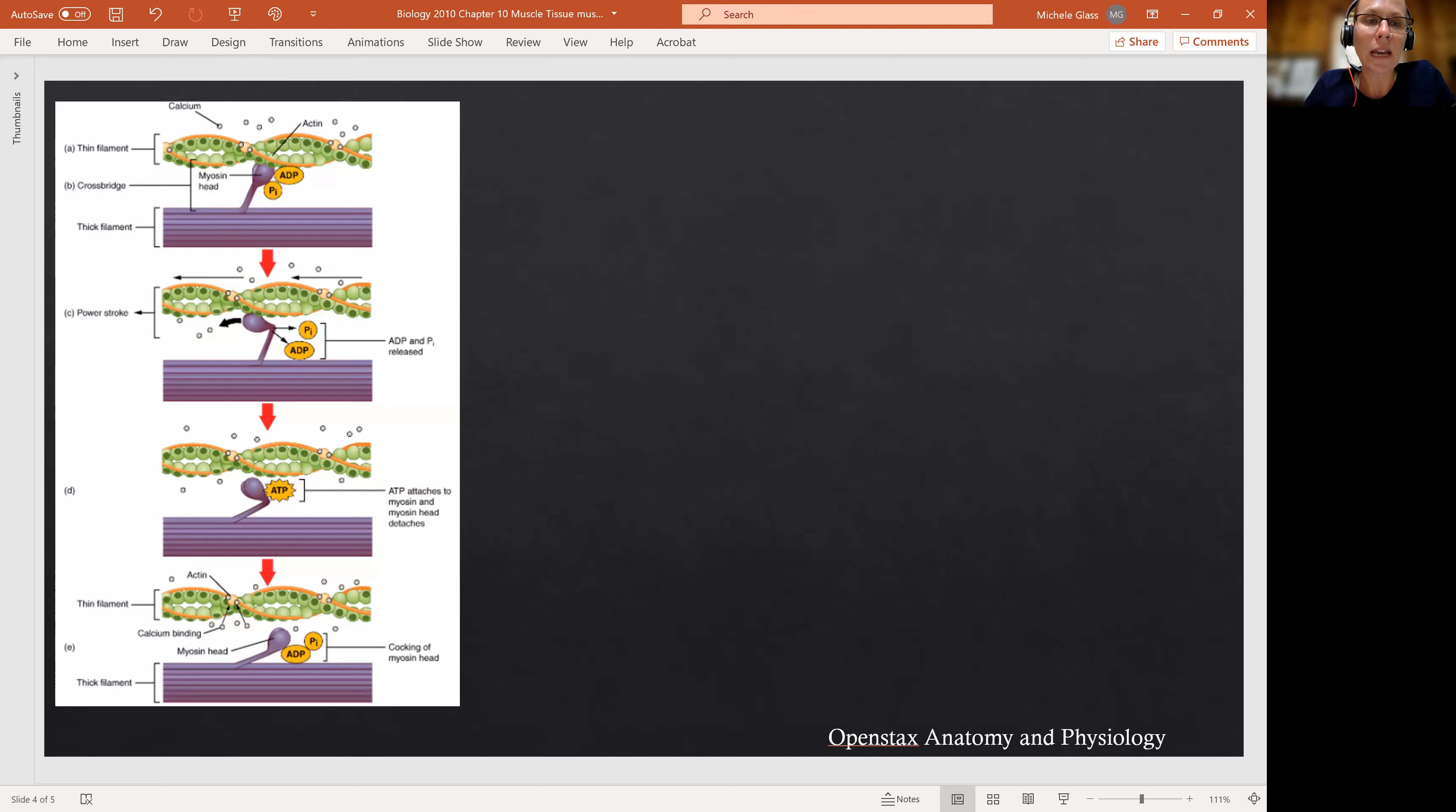Picking up here, what we're taking a look at in this particular diagram is we have a series of pictures. With each of these pictures, we're seeing our thin filament and our thick filament. So the thin filament is shown there at the top. Remember, the thin filament is composed primarily of actin. Actin is showing up here as those little green beads. And then we have a complex of proteins, the troponin-tropomyosin complex, which is sitting on top of the actin. At rest, the troponin-tropomyosin complex covers up what we can call the active site. And so at rest, there's space in between the thin filament and the thick filament.